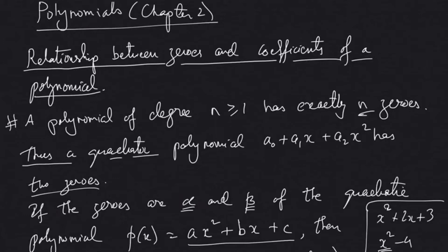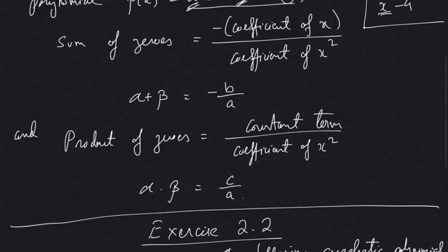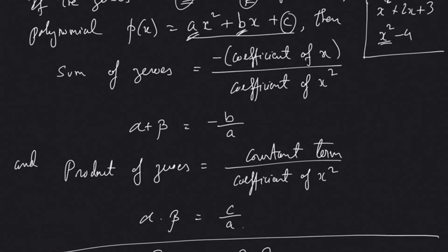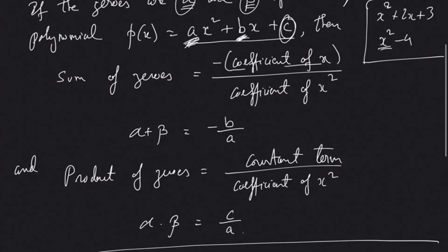The relationship between the two zeros — alpha and beta — and the coefficients of the polynomial (coefficient of x² is a, coefficient of x is b, constant term is c) is: sum of zeros equals minus of coefficient of x upon coefficient of x², that is alpha + beta = -b/a. Product of zeros equals constant term upon coefficient of x², that is alpha × beta = c/a.